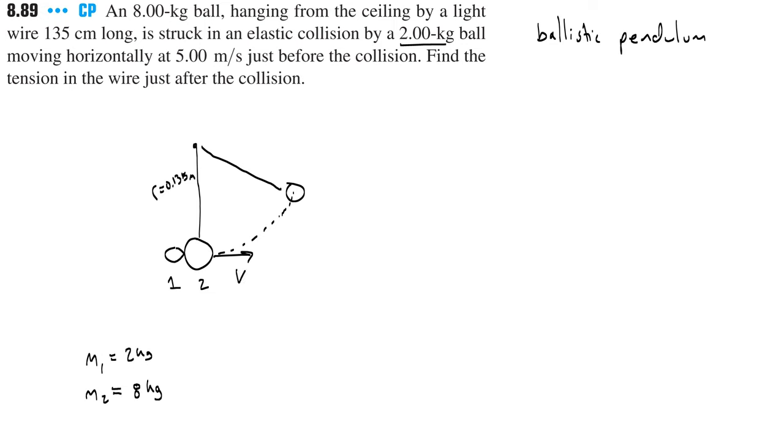That velocity happens to be at a right angle to the string, and as that ball continues to move around the path, the velocity will always be tangent to the path. That velocity we're assuming is going to be consistent, and this swing, this curved path, is really a centripetal motion problem where there is some tension in the string T that acts as our centripetal force.